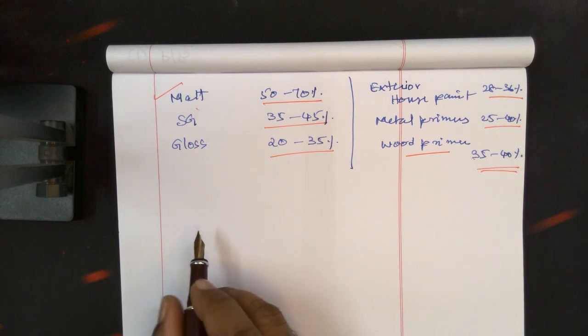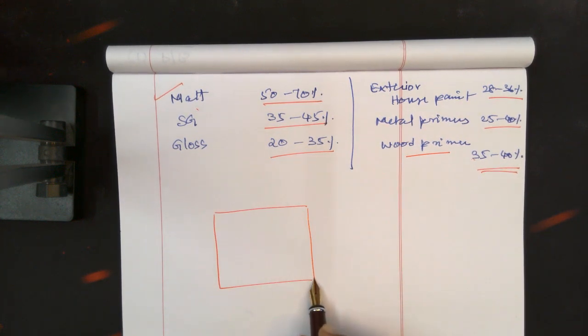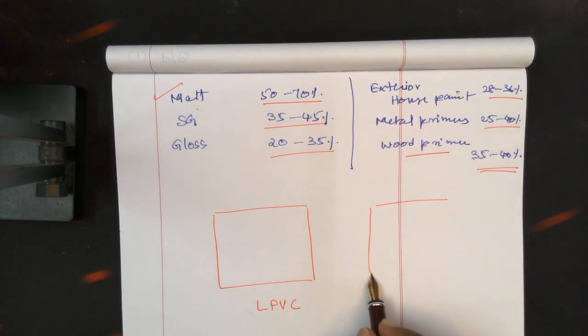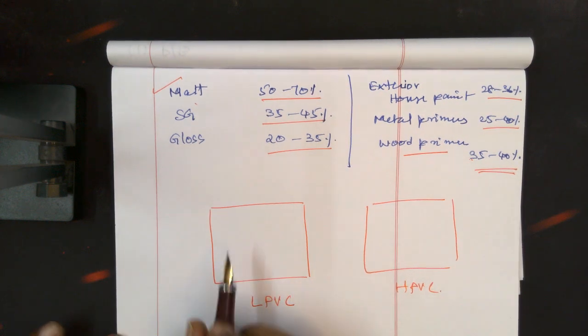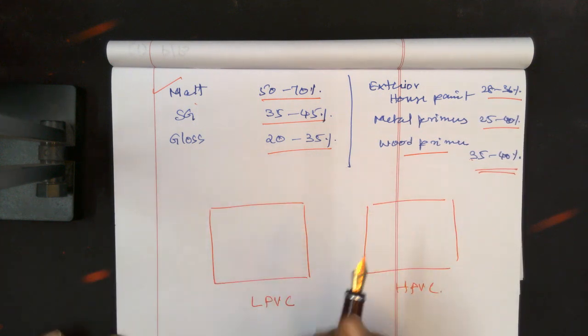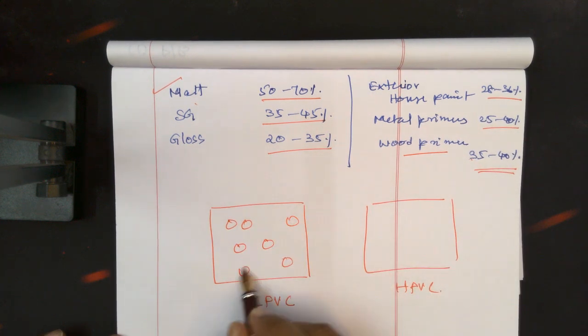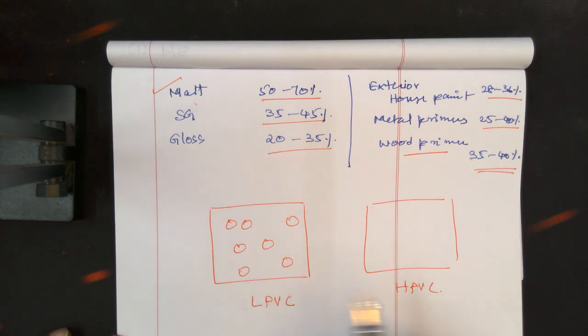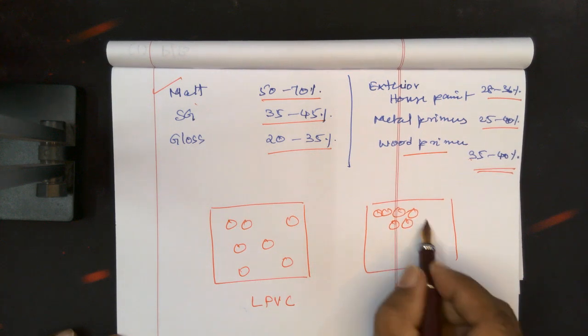Let me further explain pigment volume concentration. This is low pigment volume concentration, and this is high pigment volume concentration. What do you mean by this? Assume this is the paint vehicle, the medium. Here, the distance between the pigments dispersed is greater, whereas here it is very close, much closer. The pigment part is greater and the gaps are less.